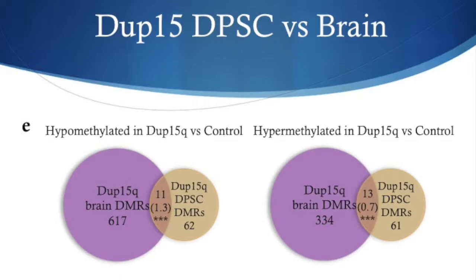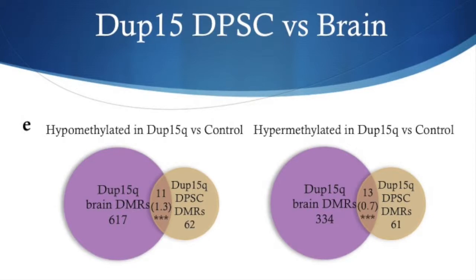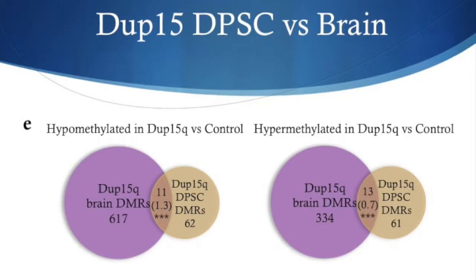Further support that DPSCs are a useful epigenetic model of DUP15Q can be found in figure 3E. These Venn diagrams show that genes previously observed to be differentially methylated in DUP15Q brain significantly overlap with those identified in DUP15Q DPSCs. The overlapping gene lists include several known autism candidate genes and those with known functions at neural synapses, all indicated in Table 1 of the manuscript.